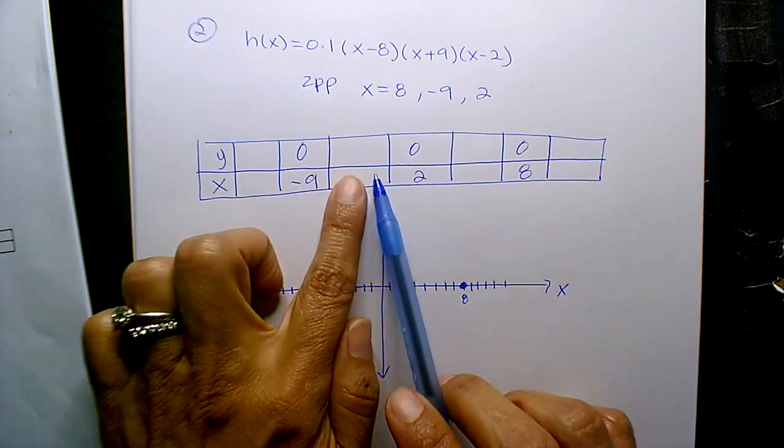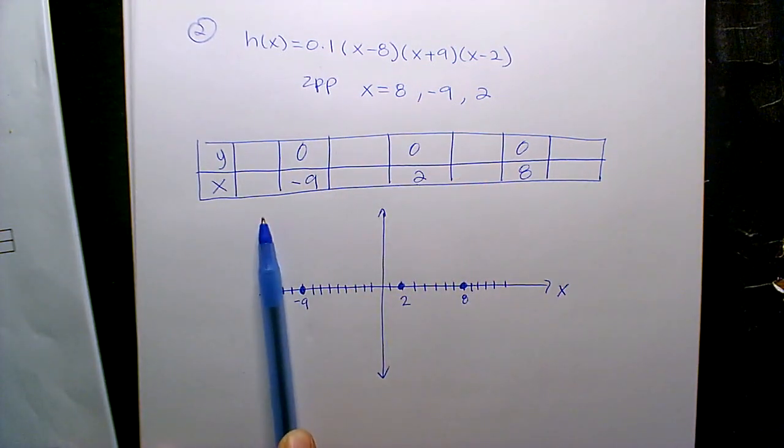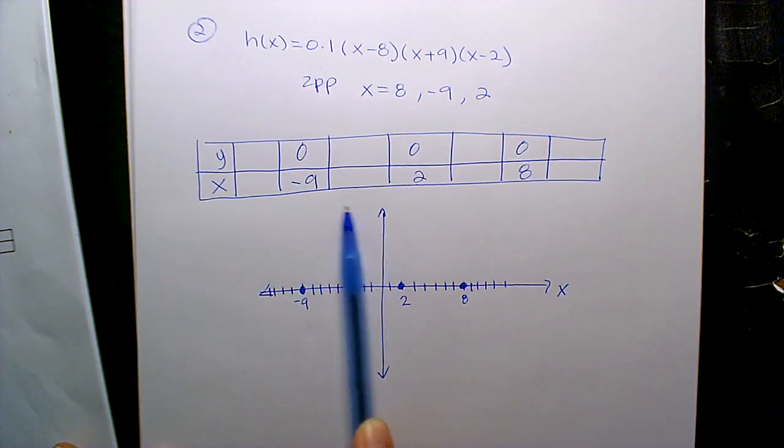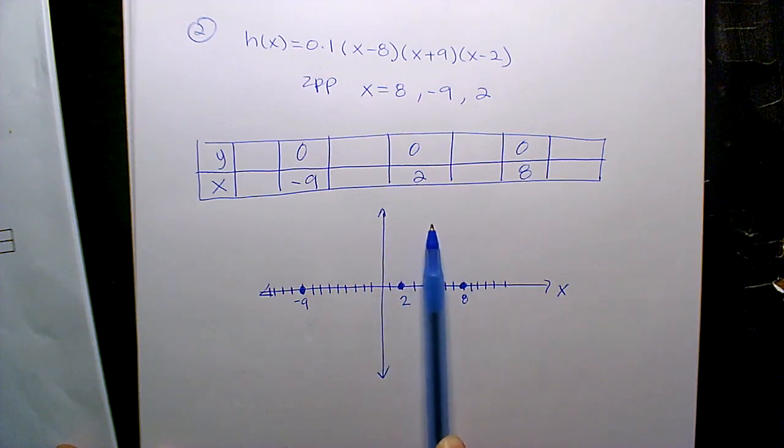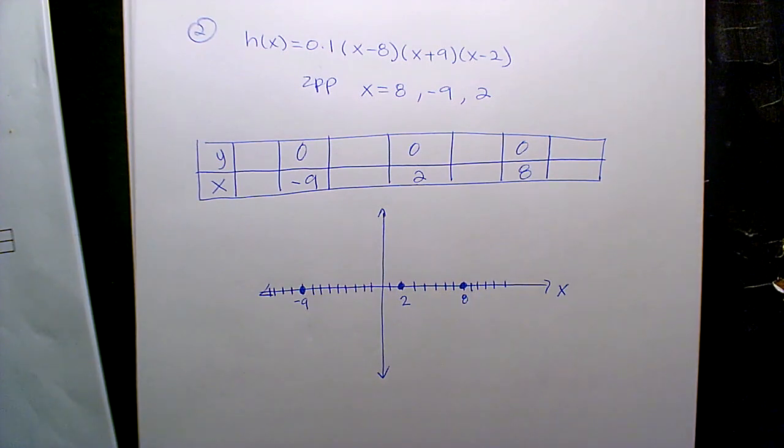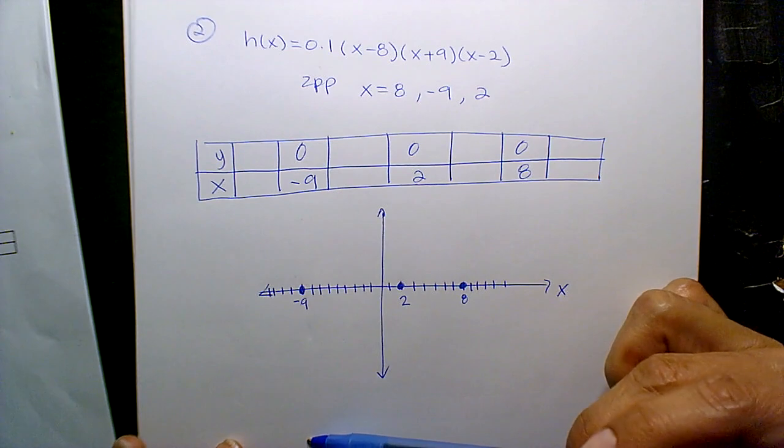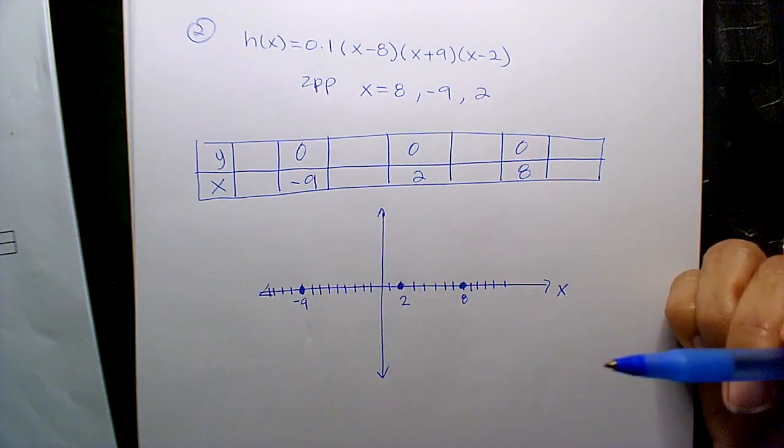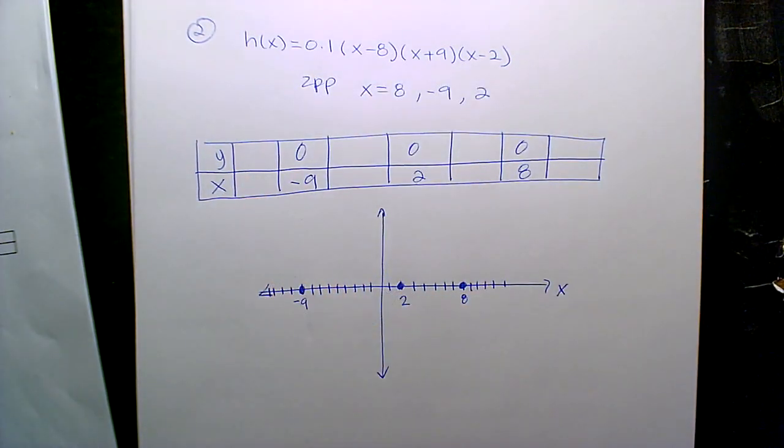Now you have to come up with numbers in the regions. Like what is the graph doing to the left of negative 9? Where is the graph located between negative 9 and 2? Between 2 and 8? And to the right of 8? Meaning, is it above the x-axis? Is it below the x-axis? You have to figure that out. So you have to come up with a number. Look, these functions shoot off. They're x-cubes.